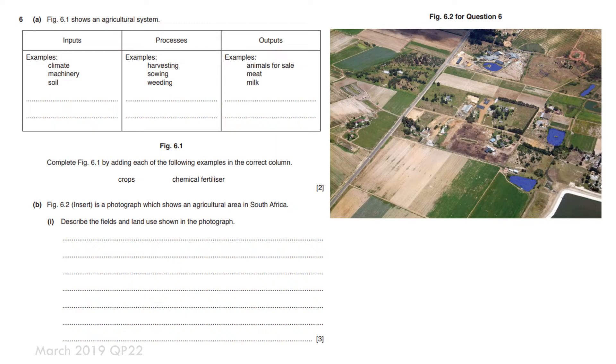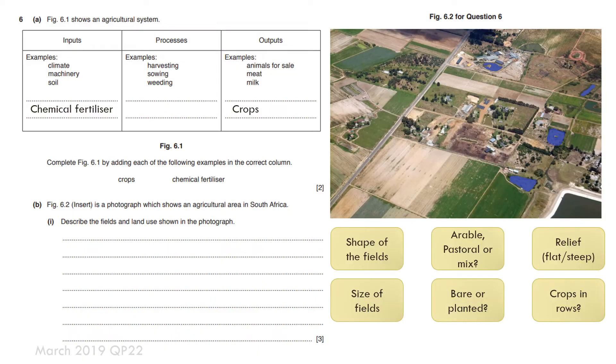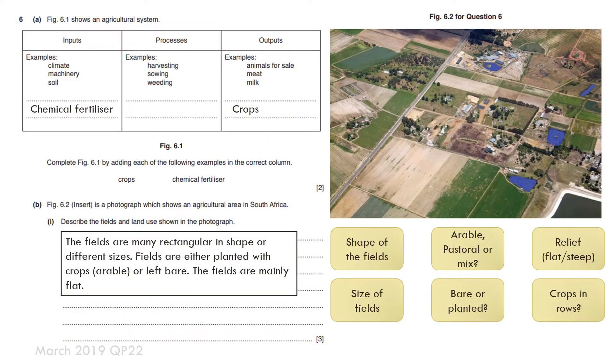Another quick question here, you might have to describe the fields and land shown in the photograph. If I'm going to do the bottom question, again comment on the shapes of the fields, the size of the fields. Again if it's arable pastoral mixed, are there some fields that are bare or have they been planted? Is it steep or flat? And how have the crops been grown? Here I can say that the fields are mainly rectangular in shape of different sizes. Fields are either planted with crops arable or left bare and the fields are mainly flat.